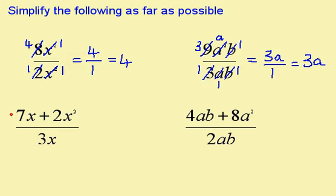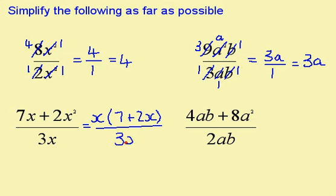For this question, I need to start by factorising the top. I can take out a factor of x. This leaves me with 7 plus 2x. On the bottom, I still have 3x. I now have a common factor of x. x goes into x once, and x goes into x once. So I now have 7 plus 2x over 3 times 1, which is 3.